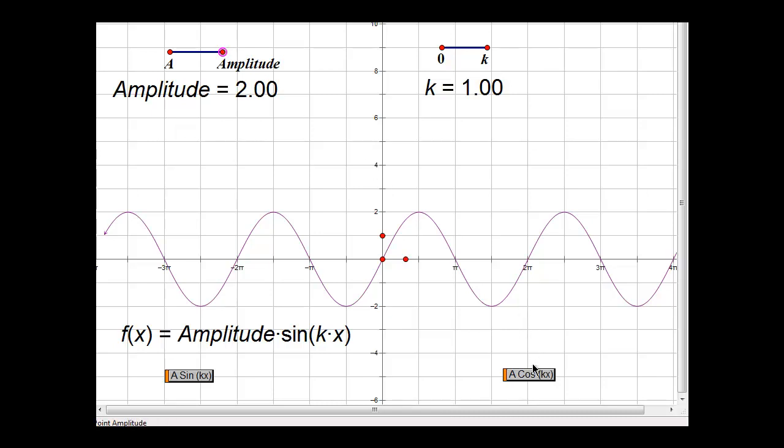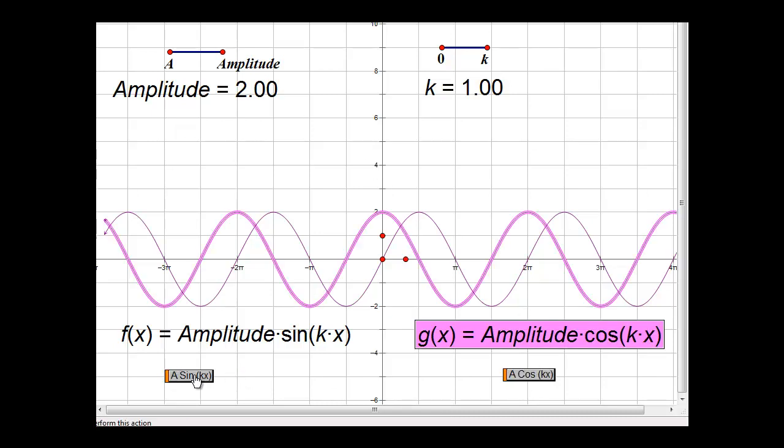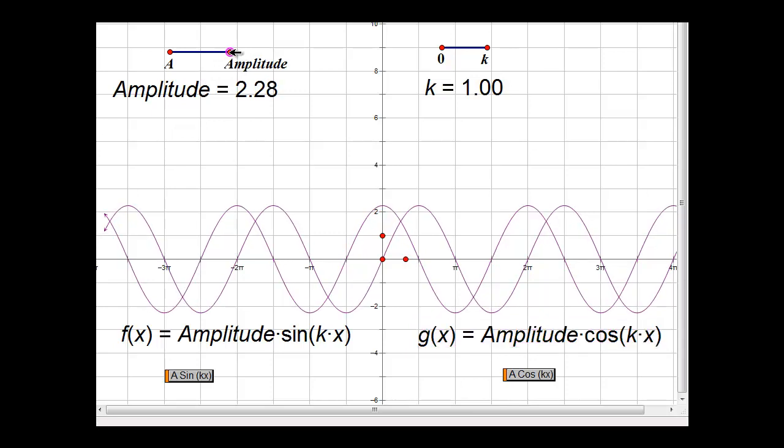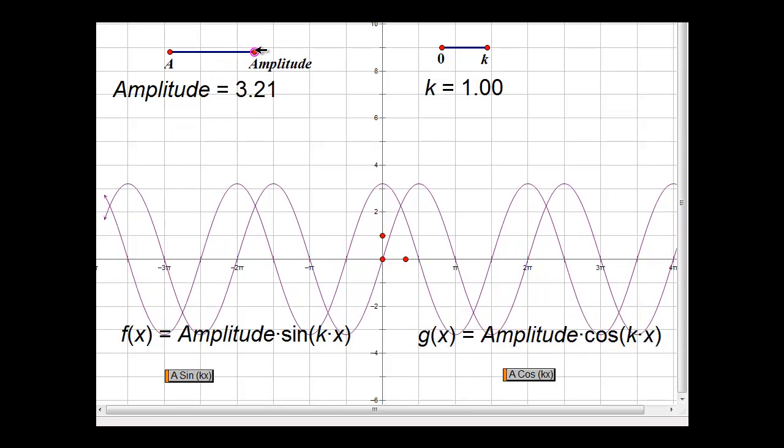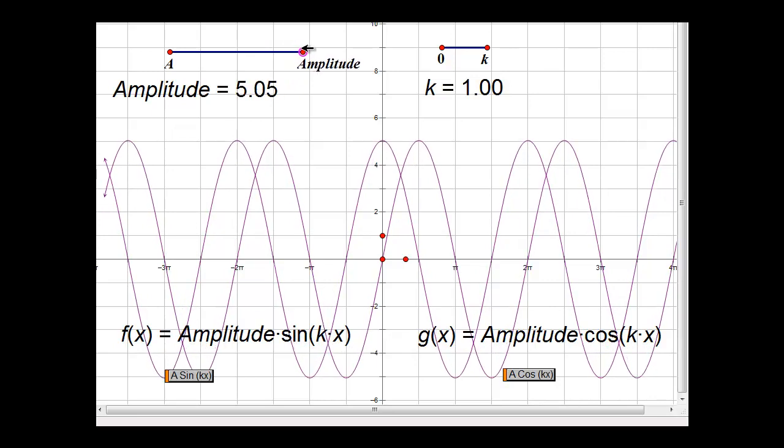The same thing is true for cosine. As a result of the amplitude, instead of going up 1 and down 1 from its center of oscillation, the cosine graph also has a maximum height of 2 and minimum of minus 2. If we further increase the amplitude for both graphs, they grow in a corresponding way. At an amplitude of 5, the graph travels 5 units above and 5 units below the x-axis, giving us a total height of 10 units.